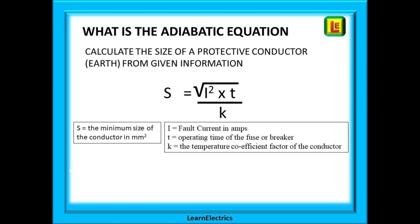What then is the adiabatic equation? It is used to calculate the size of a protective conductor or earth as it is often called. We need to know certain parameters to do with the electrical circuit and this information will be given to you in the exam question. It is all about choosing a conductor size that will carry a big fault current without overheating before the fuse blows or the circuit breaker trips.